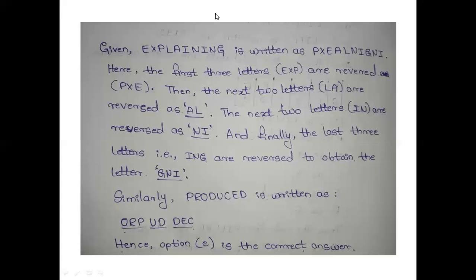And finally, the last three letters that is I-N-G, are reversed to get G-N-I. Here we get all of these. Similarly, produced is reversed. First three letters are reversed. That is P-R-O reversed we get O-R-P. And D-U reversed we get U-D. C-E-D reversed D-E-C.